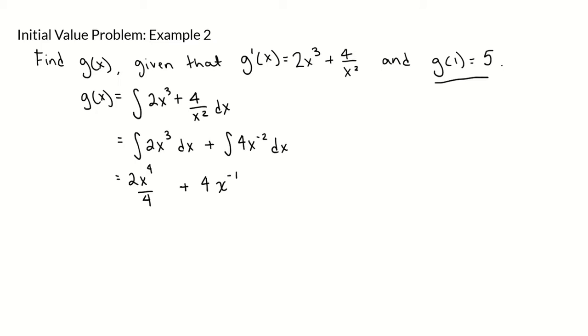So simplifying, g of x is going to be equal to 1 half x to the fourth minus 4 over x plus a constant. So now to find that constant, we're going to plug in this initial condition.